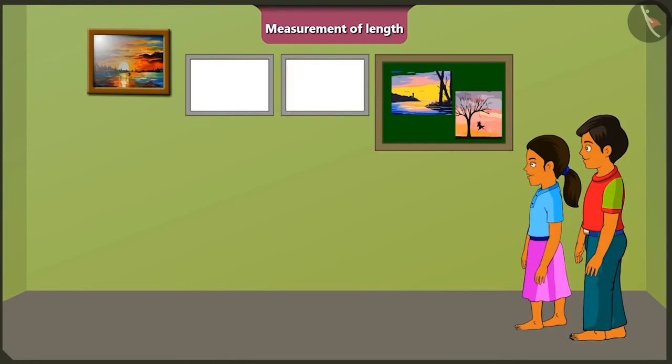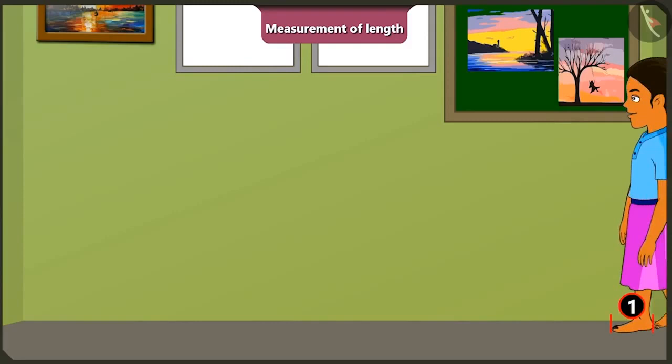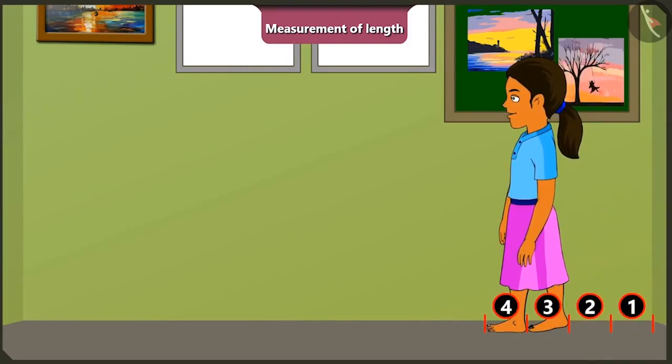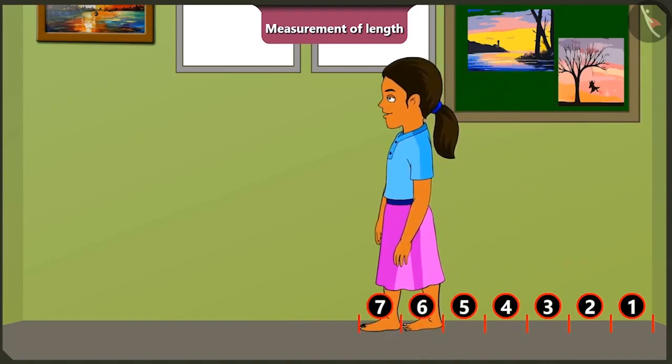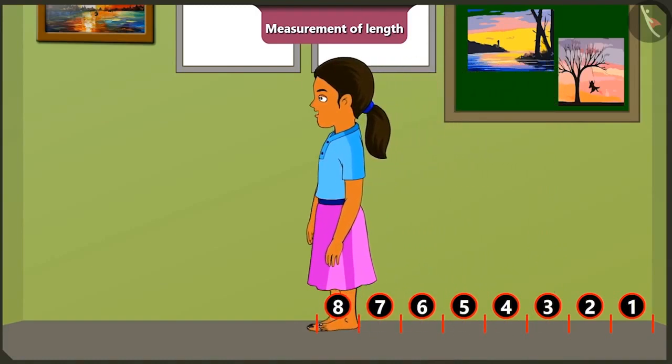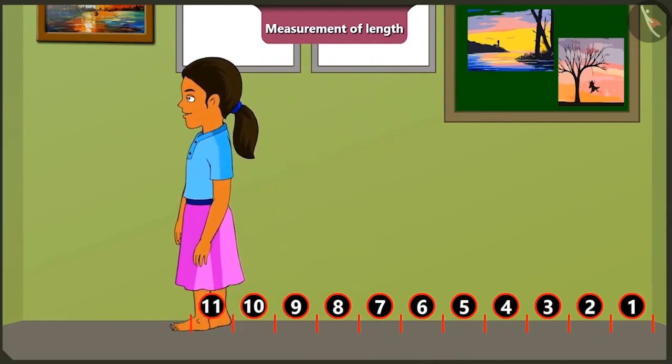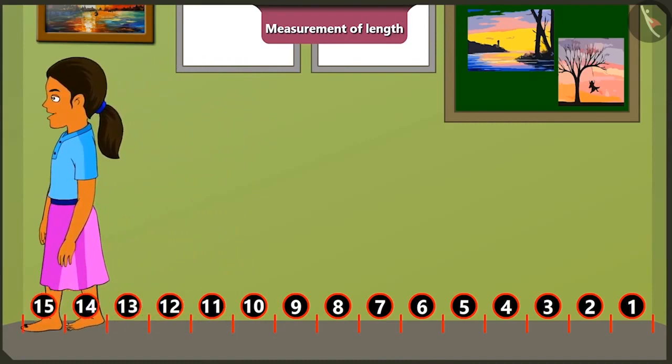See, if I measure the length of the room with my feet then the length of the room is 1, 2, 3, 4, 5, 6, 7, 8, 9, 10, 11, 12, 13, 14 and 15.